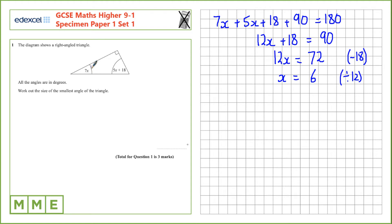Now that we know the value of x, let's find out the value of these two angles. So 7 times 6 is 42, and 5 times 6 plus 18 is 48. So the smallest angle of these two is this one here, 42 degrees.